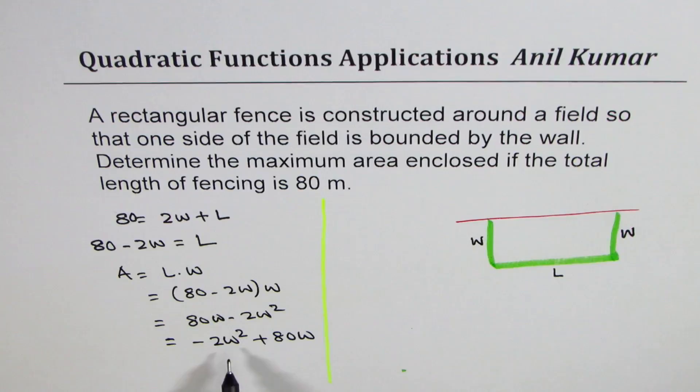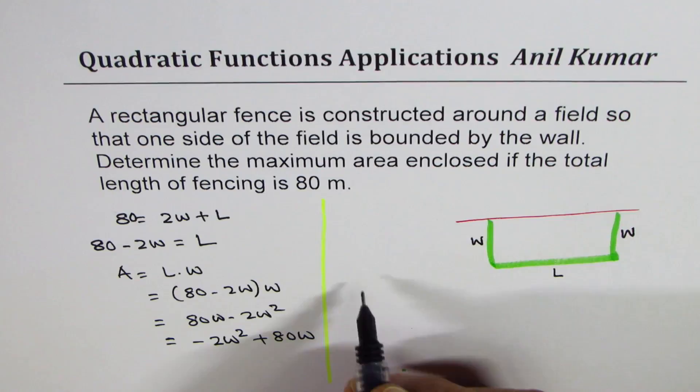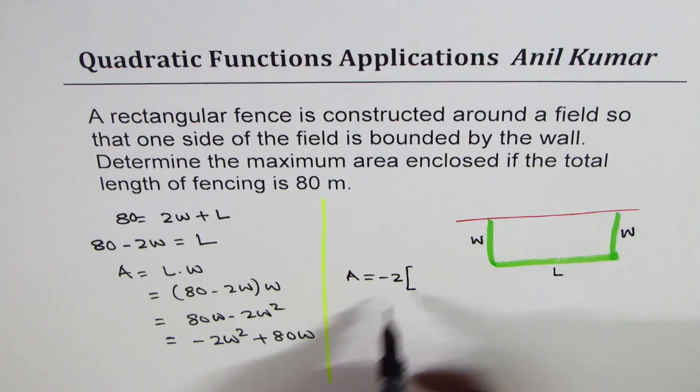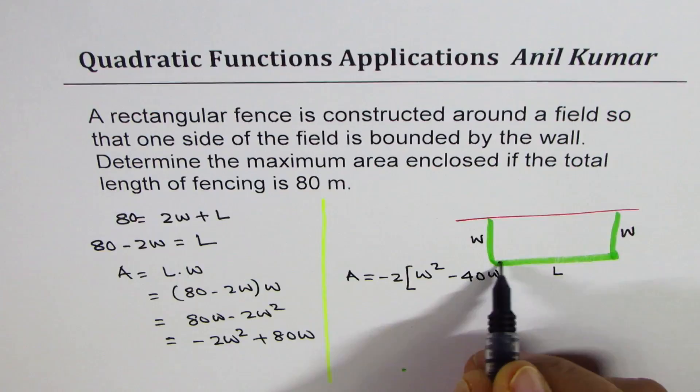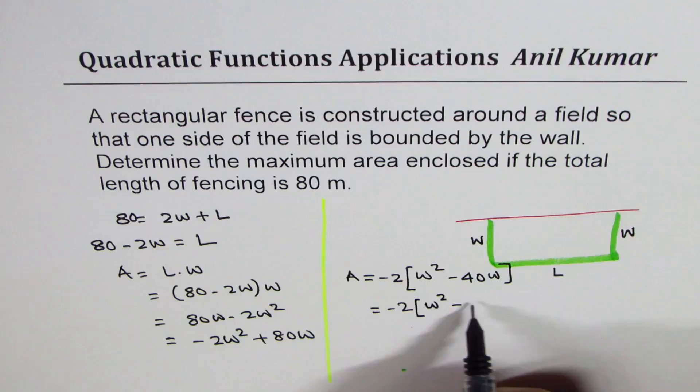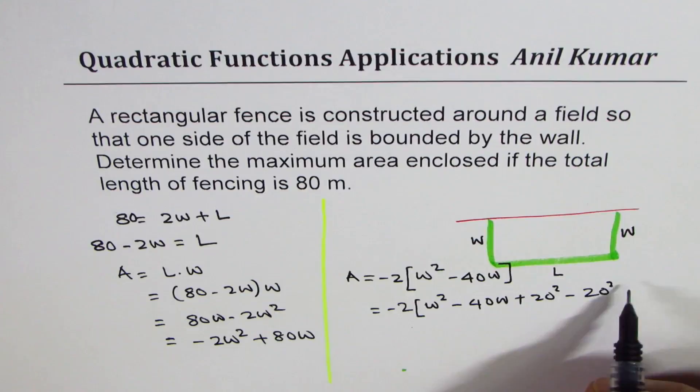Now we have to find the maximum area enclosed. To get the maximum area, we can do completing the square. So we can write area equals, taking minus 2 common, W² minus 40W. Now we'll do half of 40 squared and add and subtract it, so W² minus 40W plus 20² minus 20².